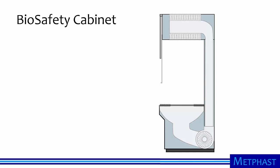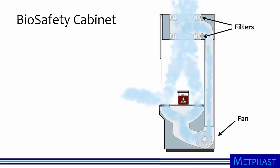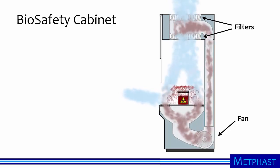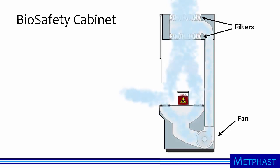A biosafety cabinet is another common enclosing hood specifically designed to handle hazardous biological materials. In this animation, we show a class 2 biosafety cabinet. A fan pulls air from the workspace floor, pushing it through high efficiency particulate air filters — HEPA filters. Some of the clean air exhausts to the room and some flows downward. Contaminated air from biohazardous materials is simultaneously pulled and pushed downward and then cleaned. This simultaneous push and pull of air eliminates most of the adverse recirculation patterns typical of traditional chemical fume hoods.